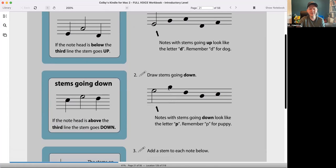Draw stems going down from the left side of each note. Like a letter P. If the note head is above the third line, then the stem goes down.